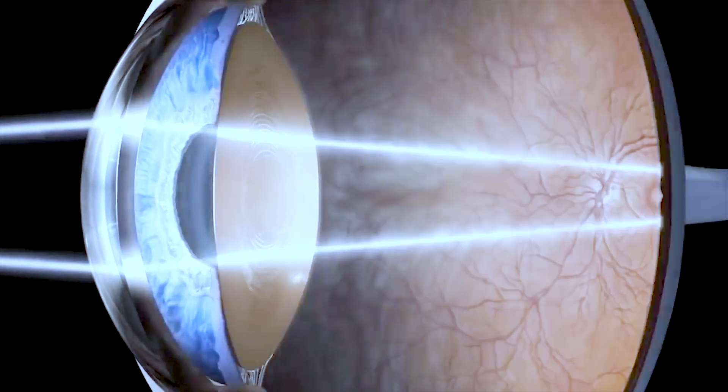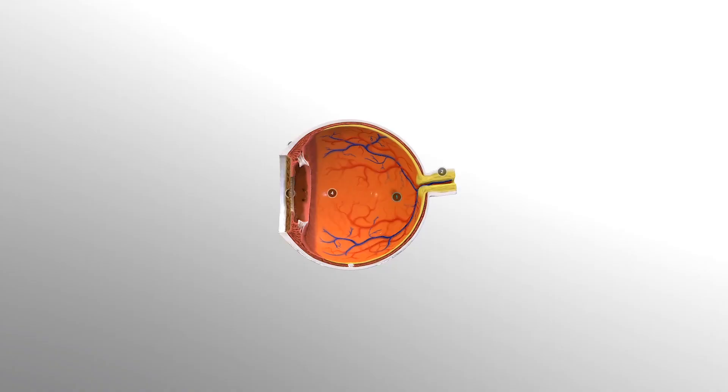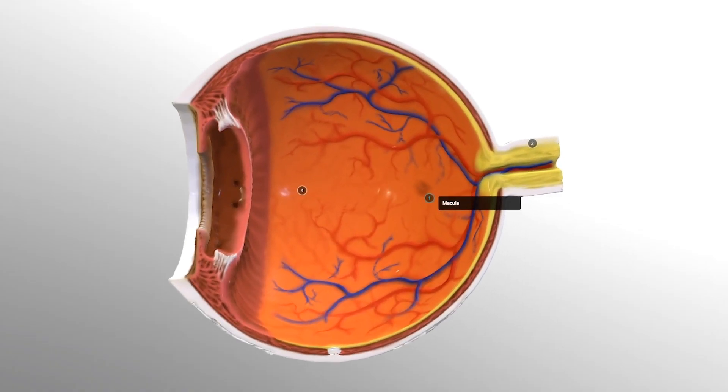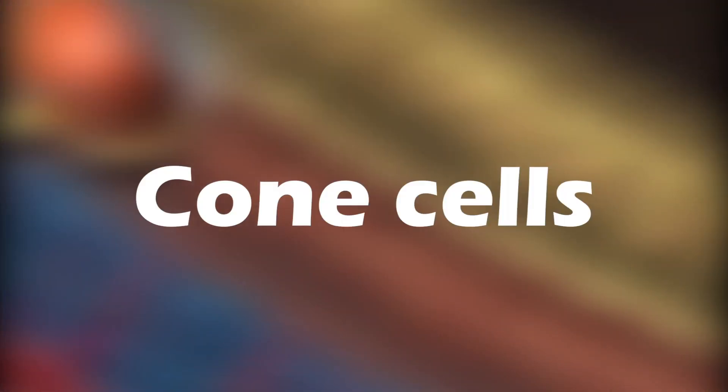After passing through the lens, light rays focus onto the retina. The most sensitive part of the retina is the macula that contains millions of cone cells.